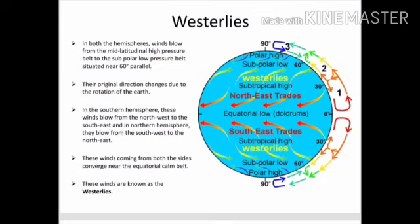What are Westerlies? In both hemispheres, winds blow from the mid-latitudinal high pressure belt to the sub-polar low pressure belt situated near 60 degrees. Their original direction changes due to the rotation of the earth. In the Southern Hemisphere, these winds blow from the northwest to the southeast, and in the Northern Hemisphere, they blow from the southwest to the northeast. These winds are called Westerlies.